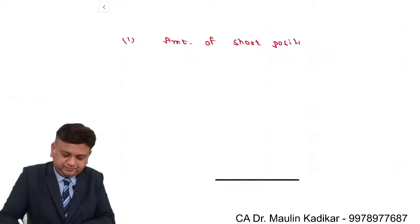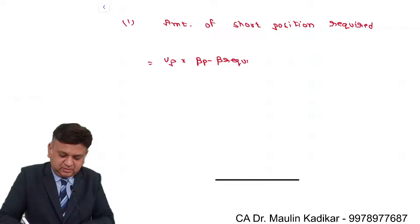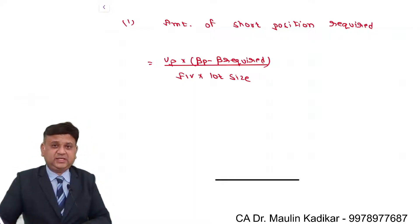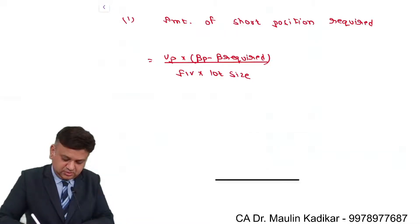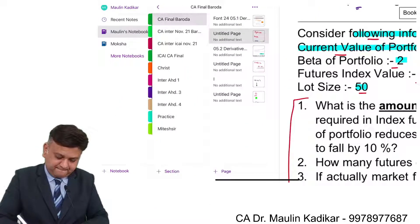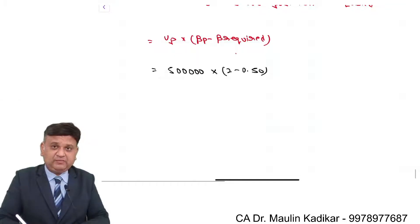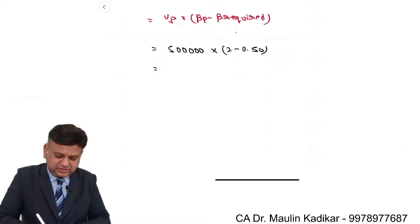Amount of short position required: value of the portfolio into beta of the portfolio minus beta required divided by futures index value into lot size. So value of the portfolio is 5 lakhs into 2 minus 0.5, so it is 5 lakhs into 1.5 that comes to 7,50,000.